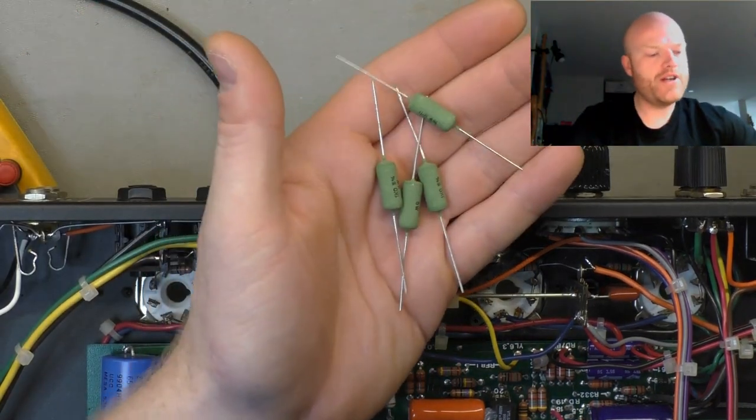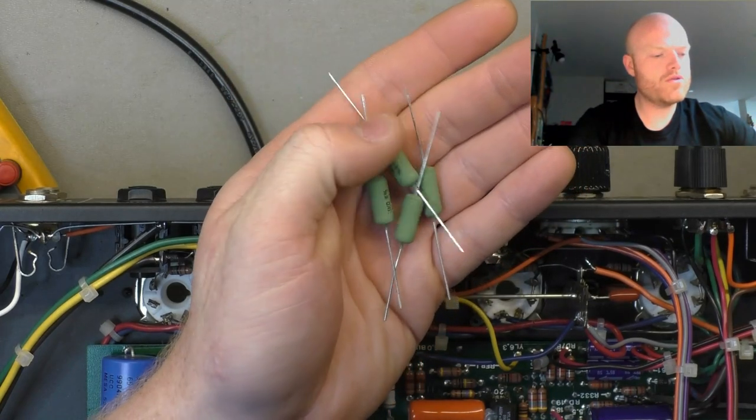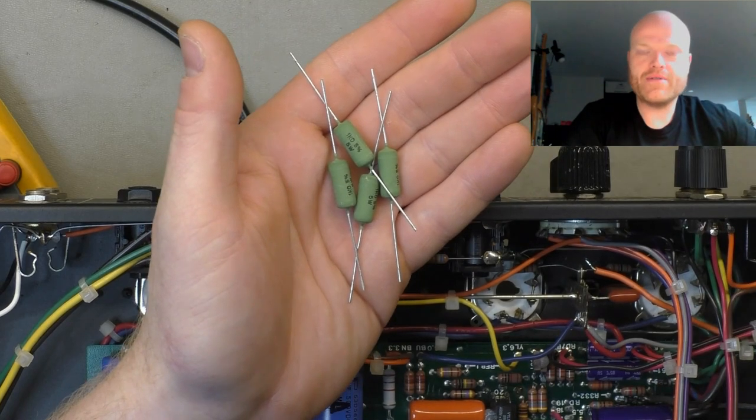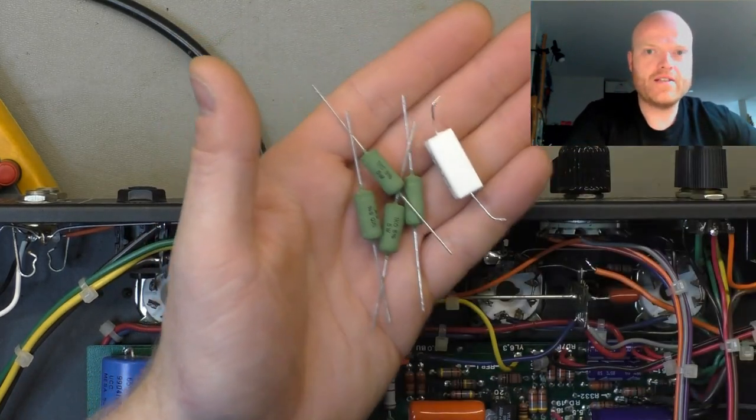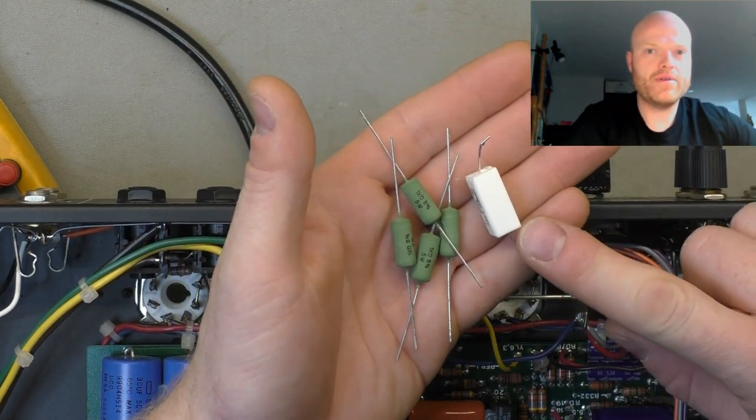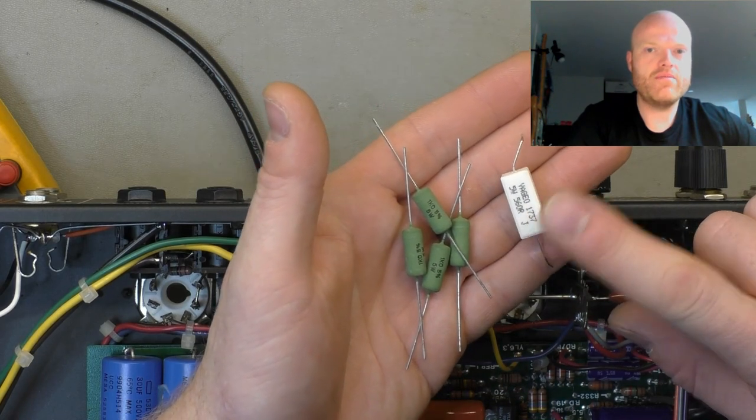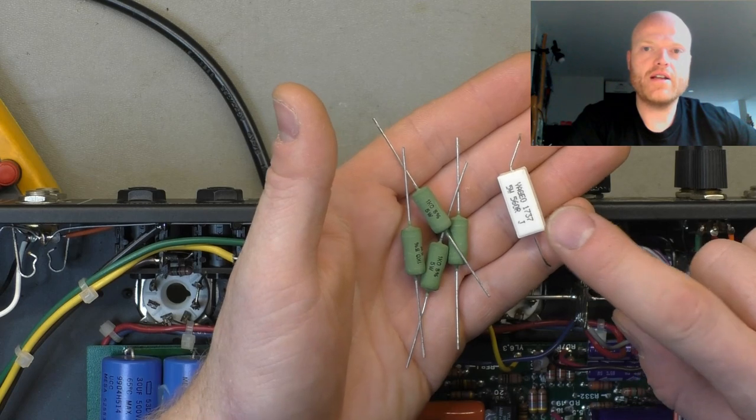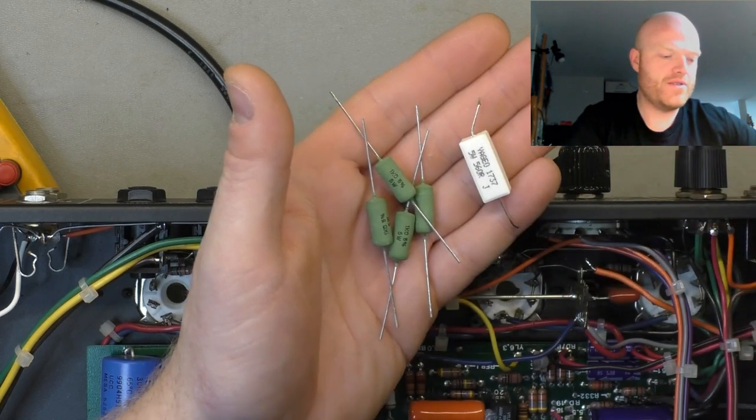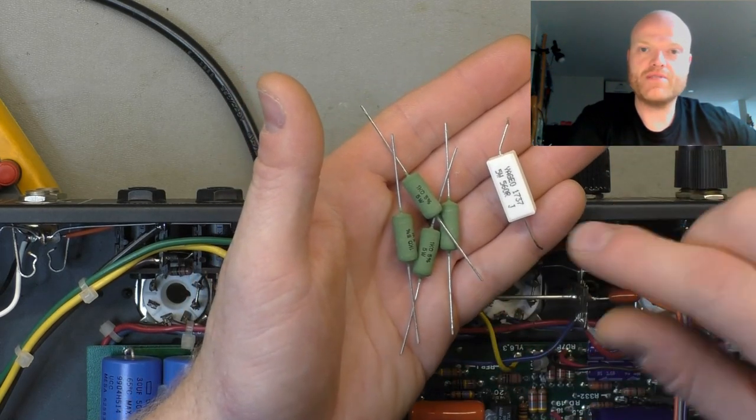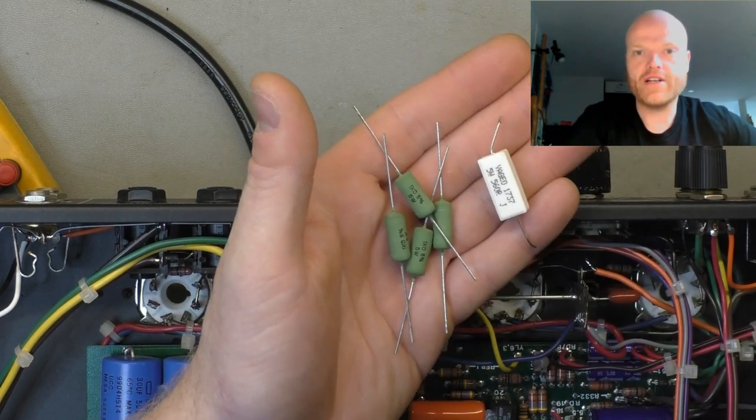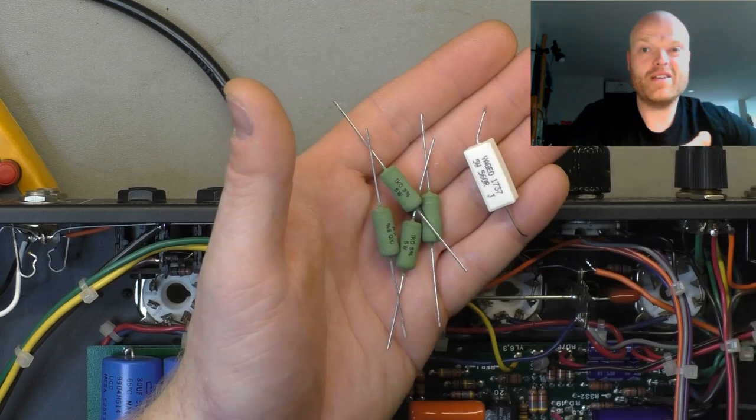So here are some new Vishay 5 Watt 1K 5% wire wound resistors. I try to use these ones where I can. These are the other type, very common, probably twice the size and about twice the mass. I try to avoid using these if I can. The smaller resistor means better air flow in that area. Less mass means less likely to crack at solder connections. And in my opinion they just look cooler.